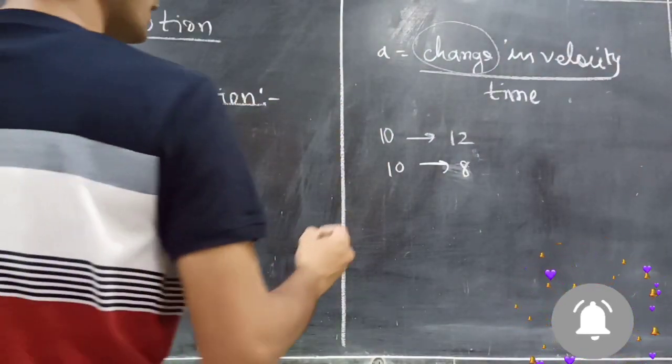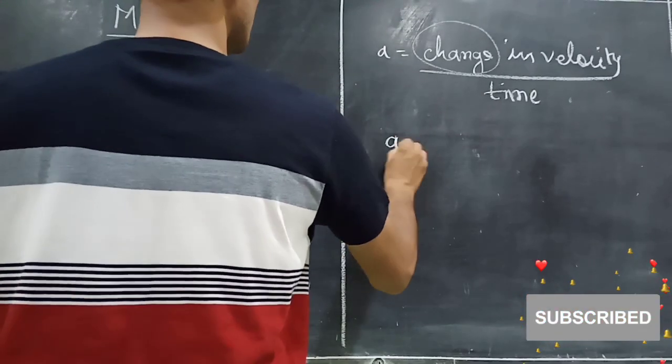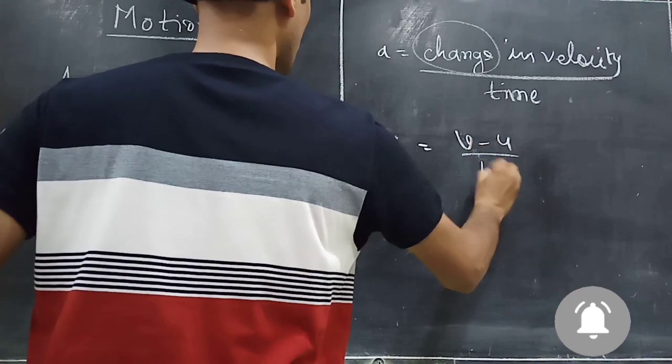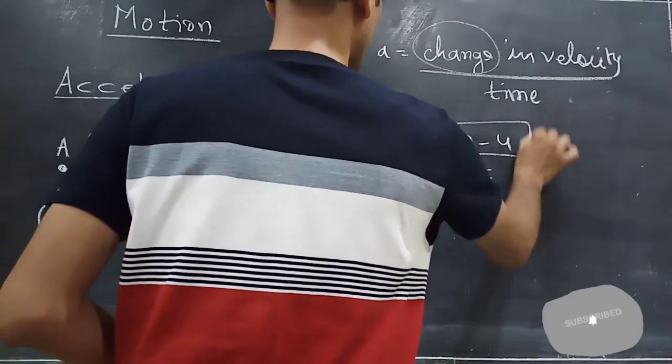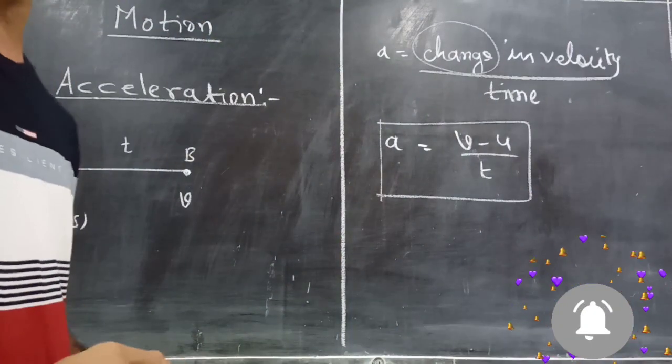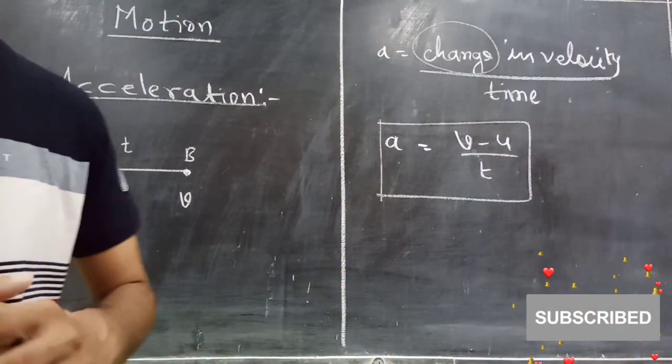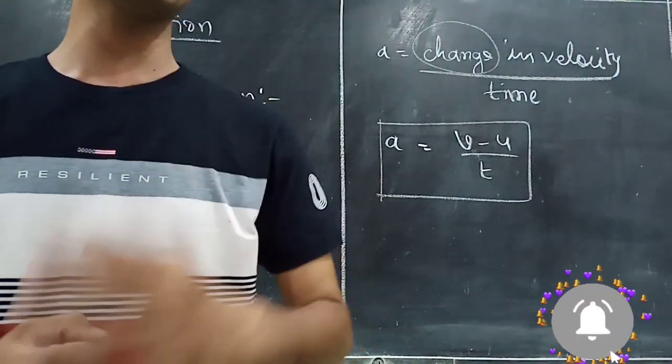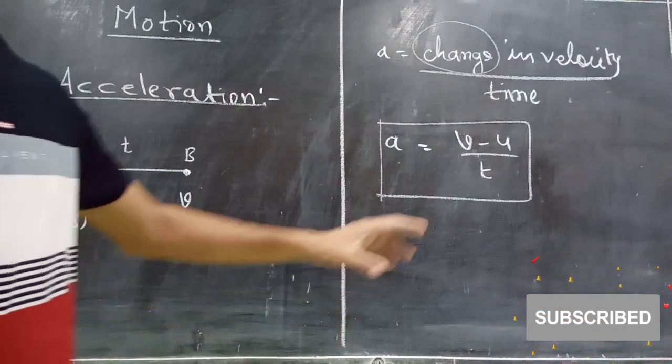So it is said here, acceleration is nothing but change in velocity. So A should be equal to V minus U by T. This is the formula of acceleration. Acceleration is also called in short form in books. Acceleration is nothing but rate of change of velocity. If you are following NCERT book, please go to page number 102. There the topic name is rate of change of velocity. Rate means with respect to time.